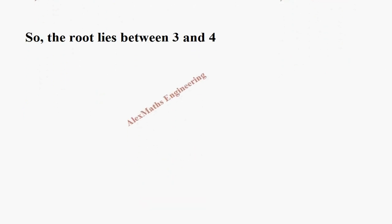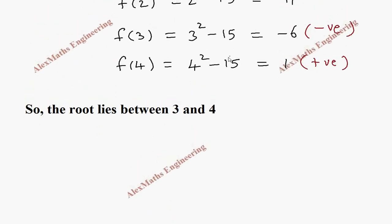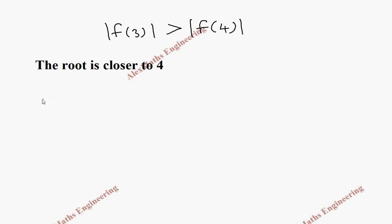Now, from these two values, we notice f of 3 modulus is greater than f of 4. It means the root is closer to 4. Now, we take x0 as between 3 and 4. Since it is closer to 4, we take it as 3.7.